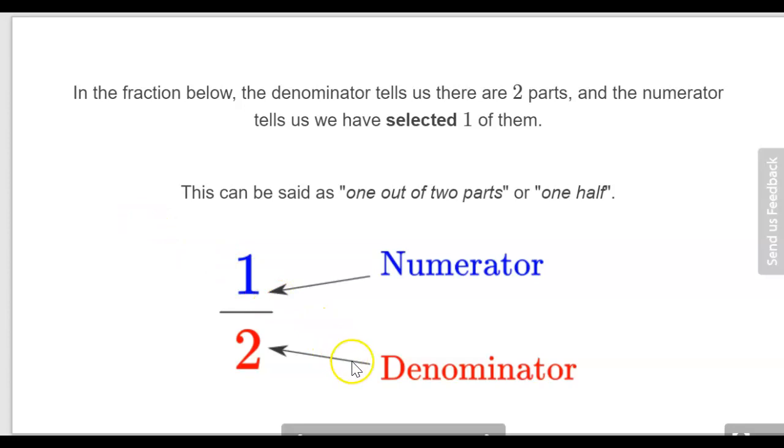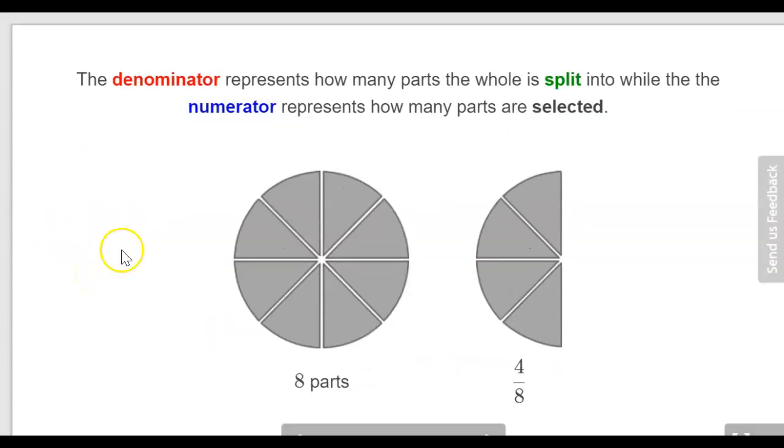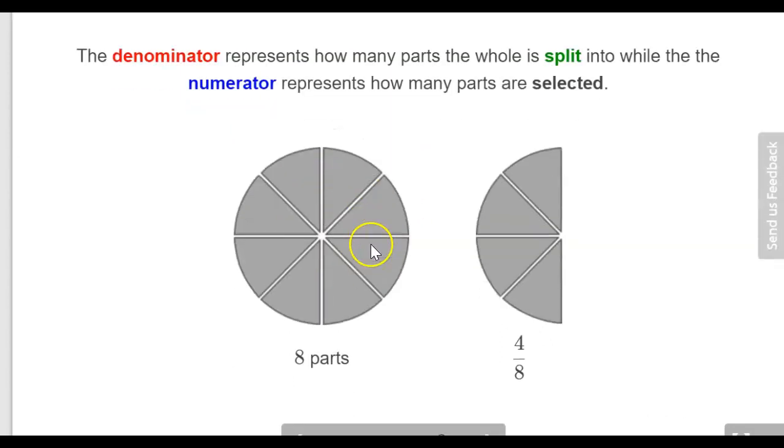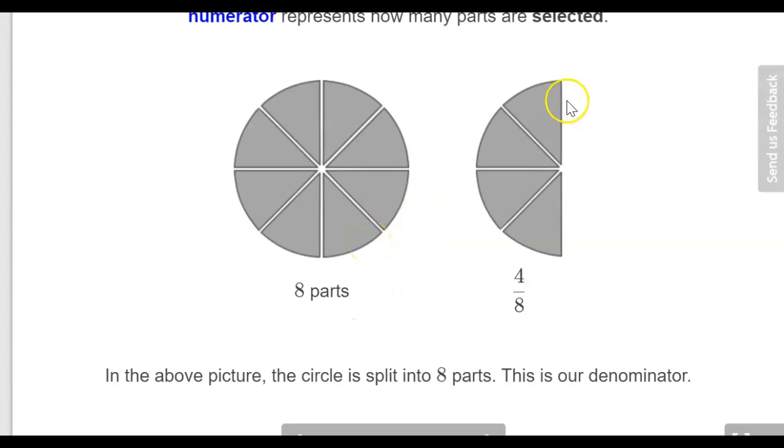If you eat one half of a pizza, the denominator tells you that there were two segments and you ate one of them. The denominator represents how many parts a whole is split into. You can see here it looks kind of like a pizza and there's eight parts in total. So if I was to eat four of them then you would say that four eighths of the pizza was eaten.